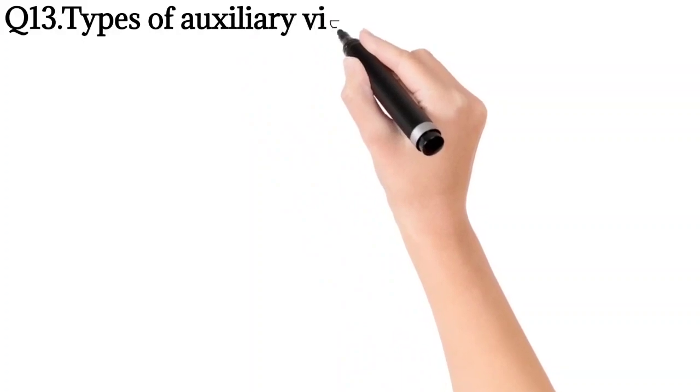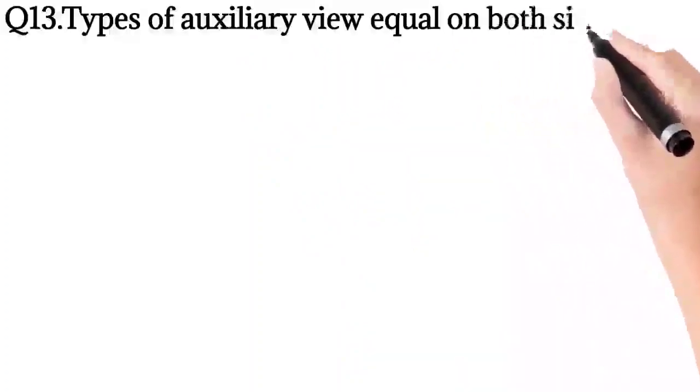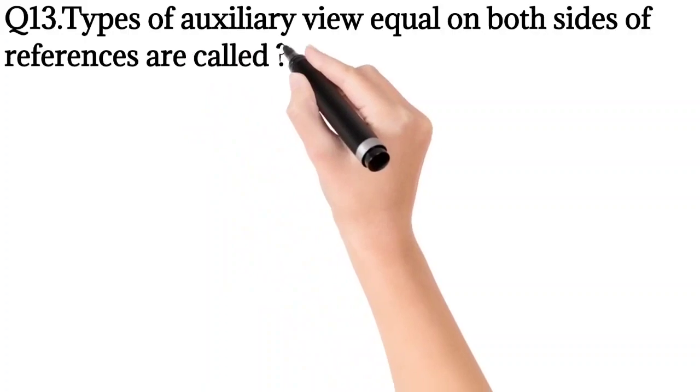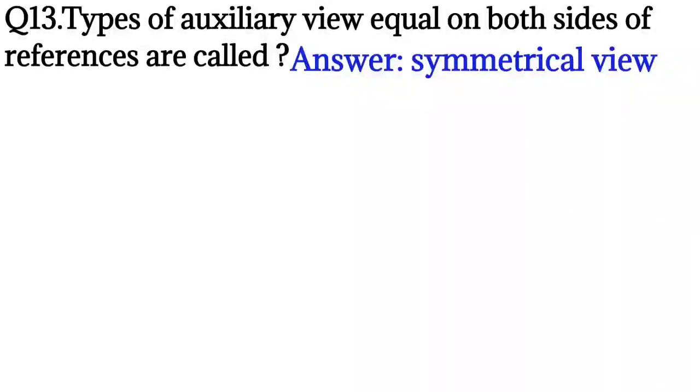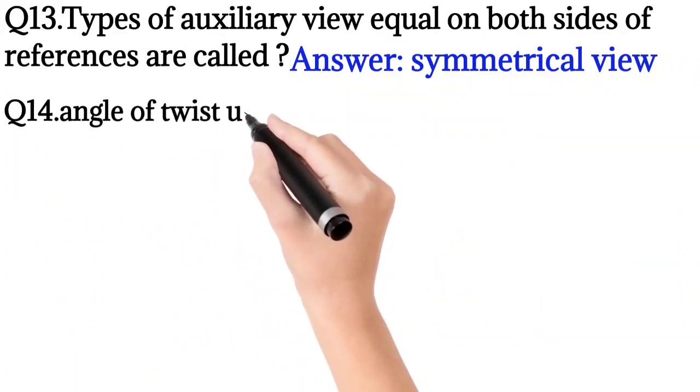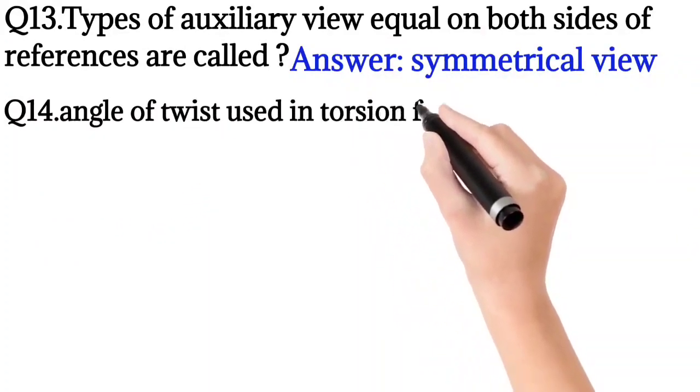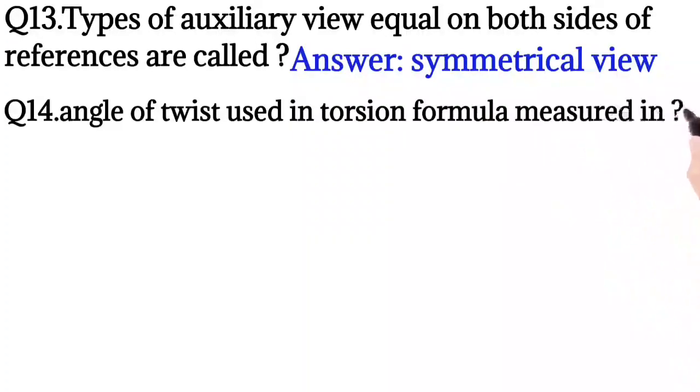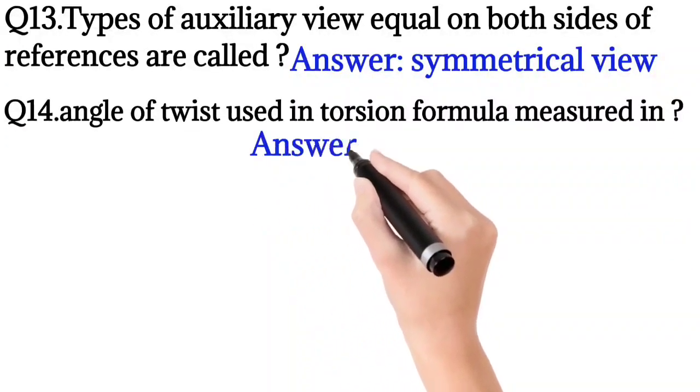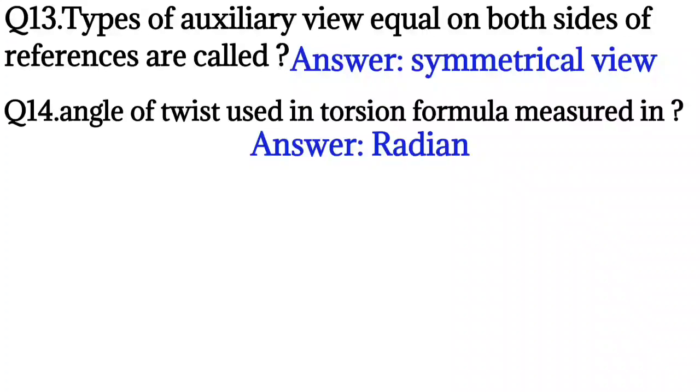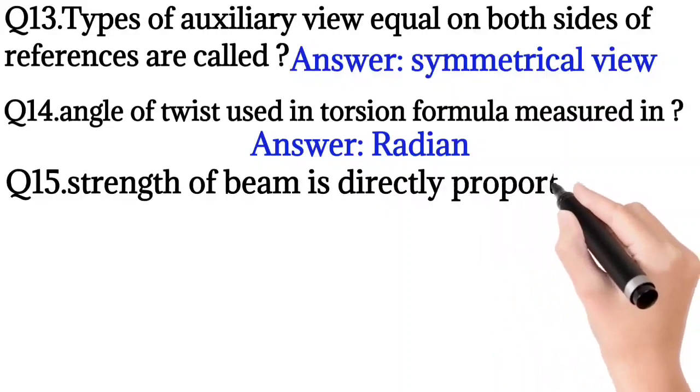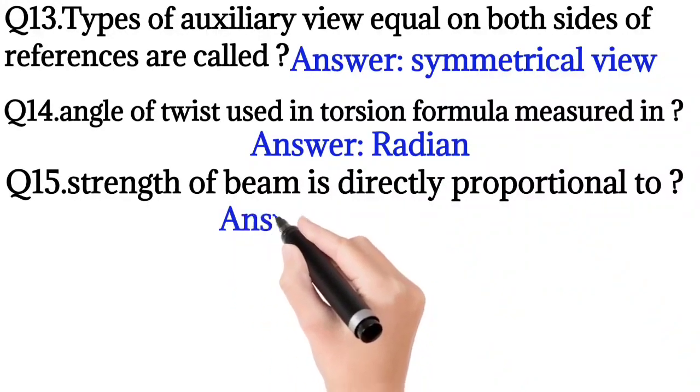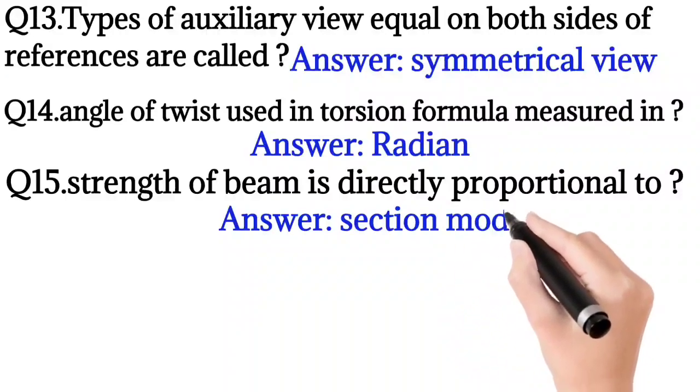Question number 13: Types of auxiliary view equal on both sides of references are called? So the answer is symmetrical view. Question number 14: Angle of twist used in torsion formula made in? So the answer is radian. Question number 15: Strength of beam is directly proportional to section modulus.